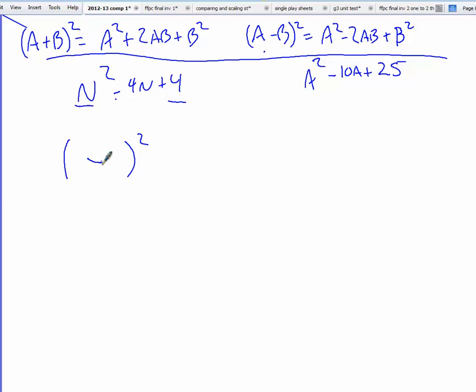If this is a square binomial, what would the square root of 4 be? 2. So we'd have 2 here. What's the square root of n squared? n.